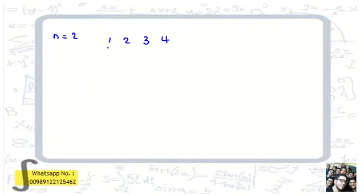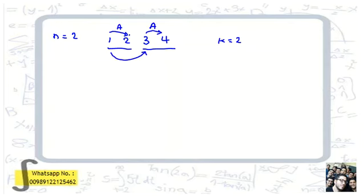If k equals 2, for example, if set A has two cable cars: 1 to 2 and 3 to 4, and cable cars of B are 1 to 3 and 2 to 4, then in A, 1 and 2 are linked, 3 and 4 are linked, and in B, 1 and 3 are linked, and 2 and 4 are linked.